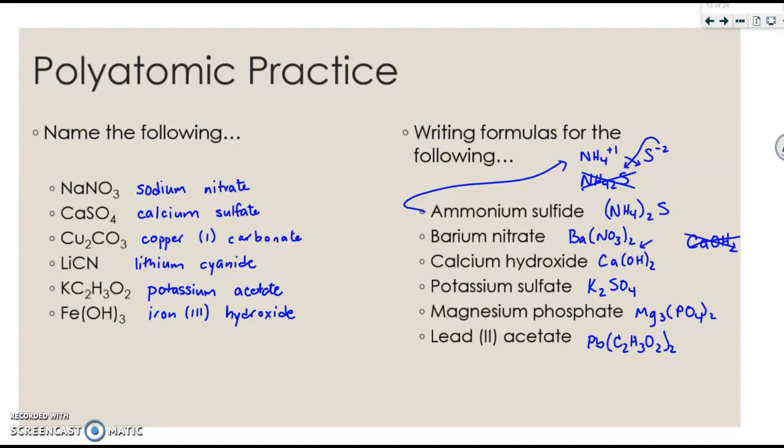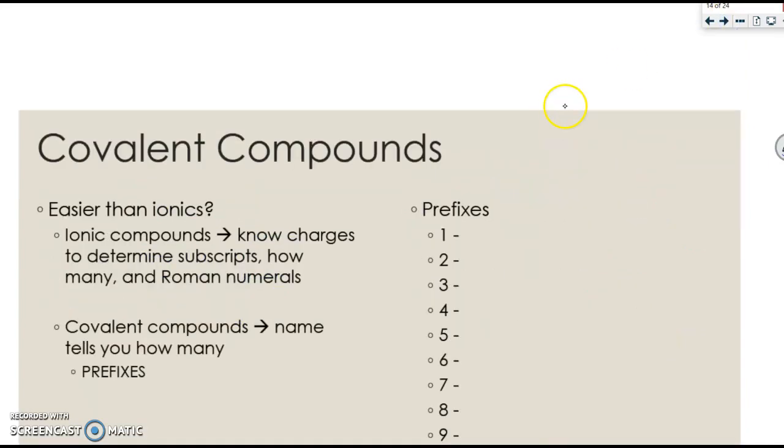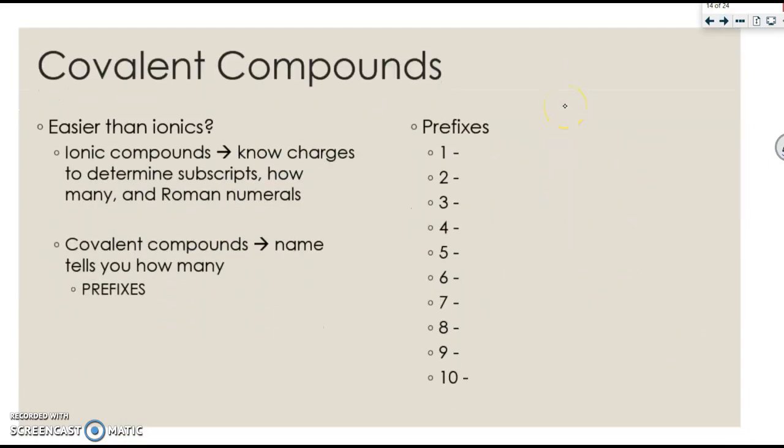And again, this takes practice. There's practice available online. We're now going to kind of transition. So we spent a lot of time talking about ionics. Now we're going to talk about things that are covalent. Personally, I think these are a little bit easier than the ionics, because for the ionic compounds you have to know all your charges, figure out the subscripts, know all those polyatomics, and know your Roman numerals.